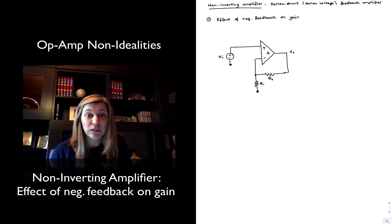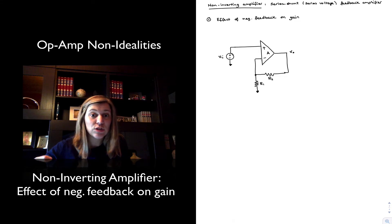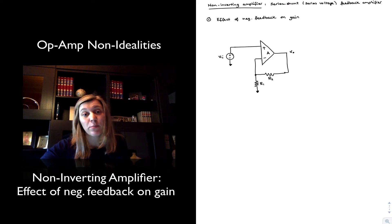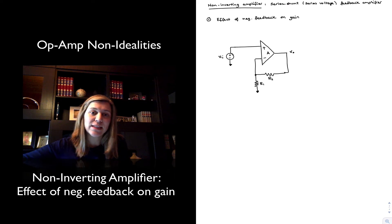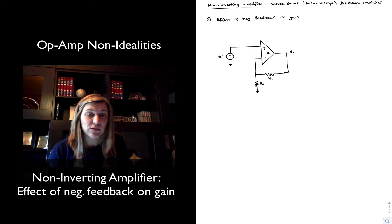Specifically, it's a series shunt configuration, also known as series voltage. The reason it receives this name is because the voltage is sampled at the output. Voltages are always sampled in shunt and then fed at the input in series with the input signal. Series shunt means it's fed back at the input in series and sampled at the output in parallel or in shunt.